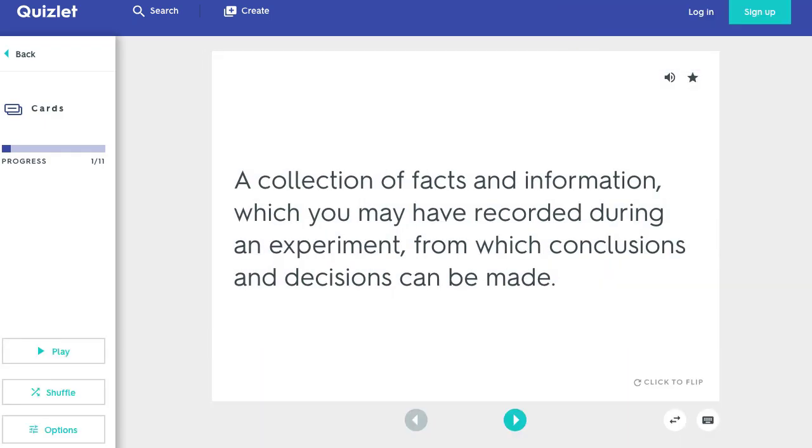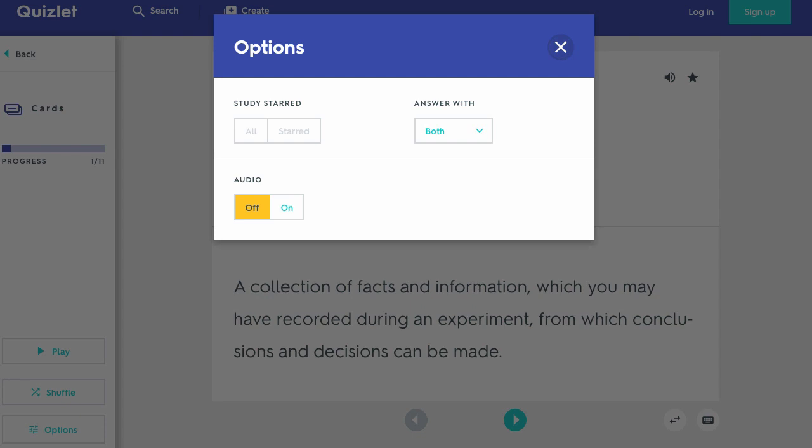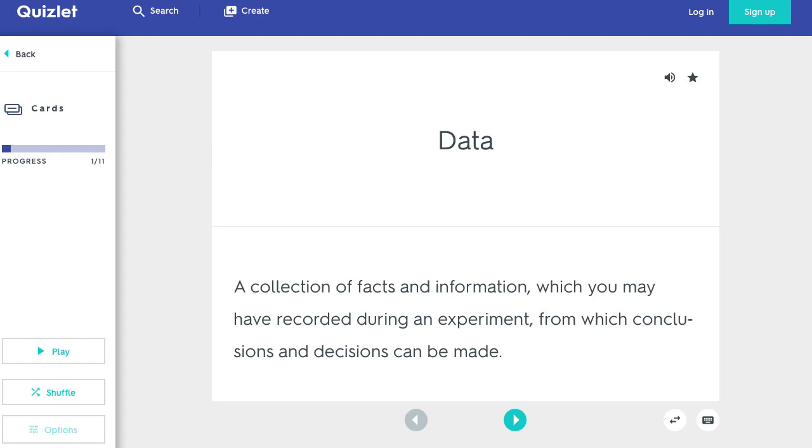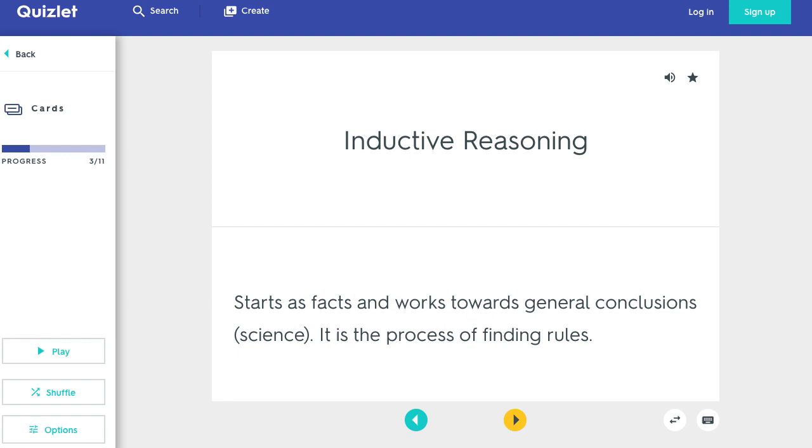That opens up in a program called Quizlet. Now what you want to do to start with, if it doesn't open up with both sides, you can go to options and answer with, select that and go to both, and then exit out of that. So you can see the definition there, the term itself, and then the text definition below that. A collection of facts and so on.